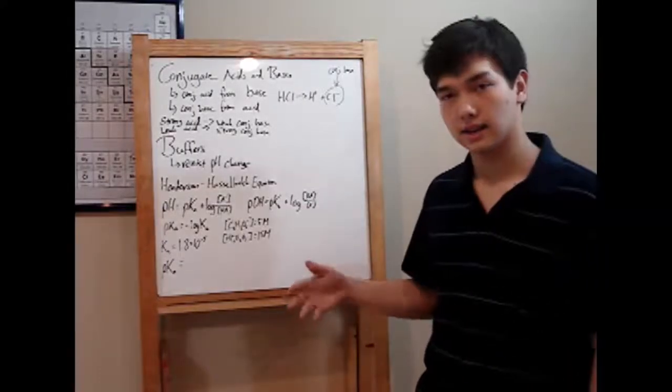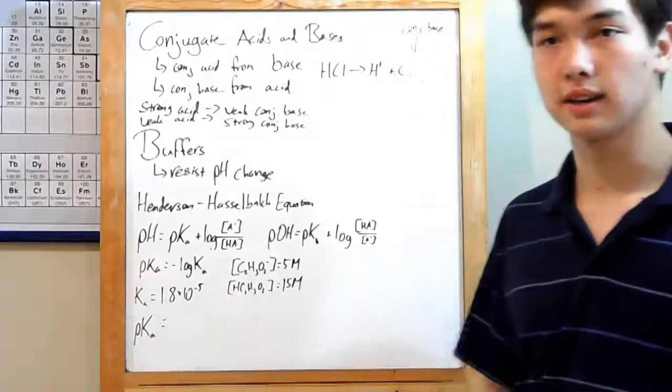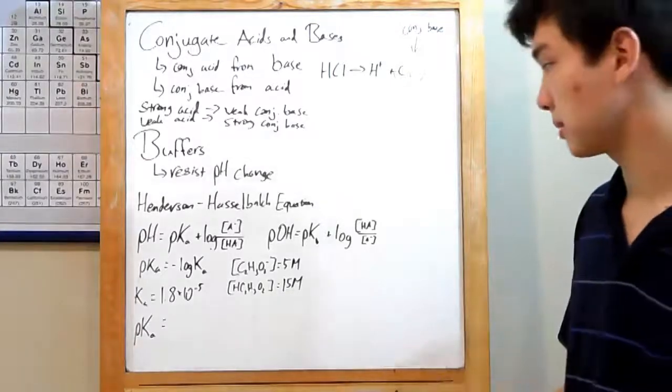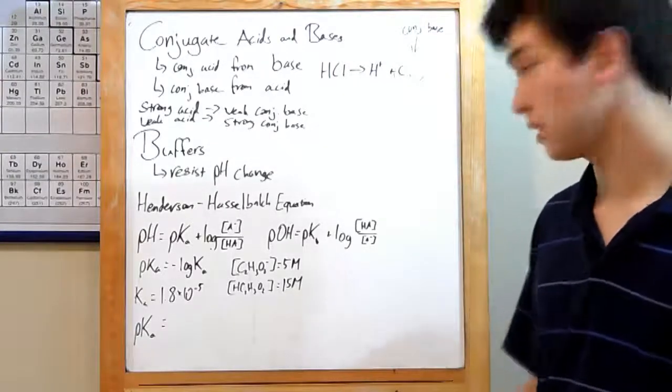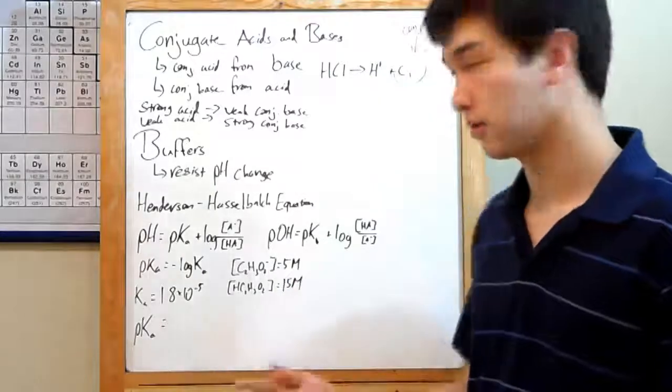Now, you can use this to calculate the pH, of course, of buffers. The pKa is defined as the negative log of the Ka. Remember, Ka is your equilibrium constant for any acid in equilibrium. Kb is the equilibrium constant for a base, and pKb would be negative log of Kb.